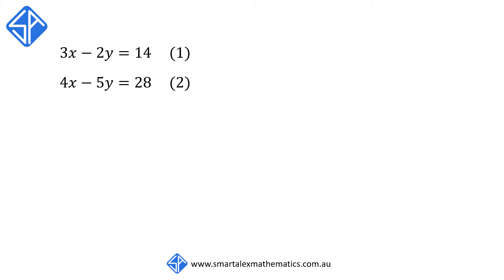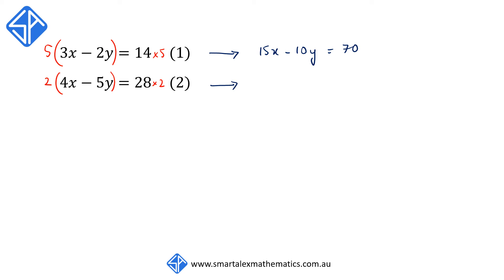Our last example: we have 3x minus 2y is equal to 14 and 4x minus 5y is equal to 28. In these two equations, we don't have a common x term nor a common y term. We can multiply the first equation by 5 and the second equation by 2, giving us 15x minus 10y is equal to 70 and 8x minus 10y is equal to 56. We call these equation 1 dash and equation 2 dash.